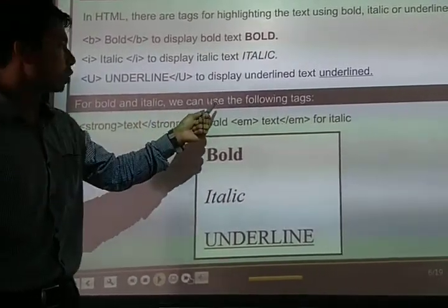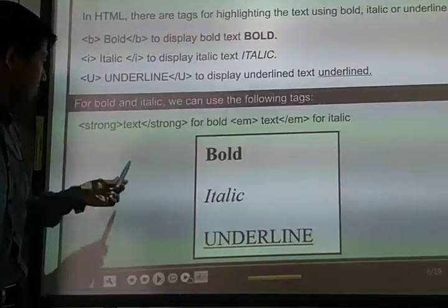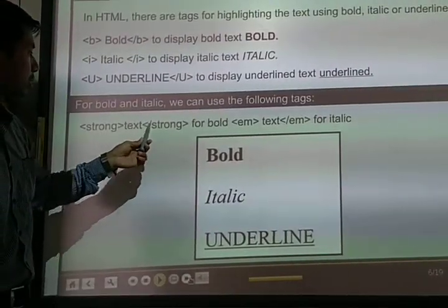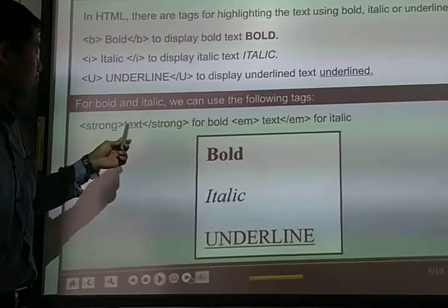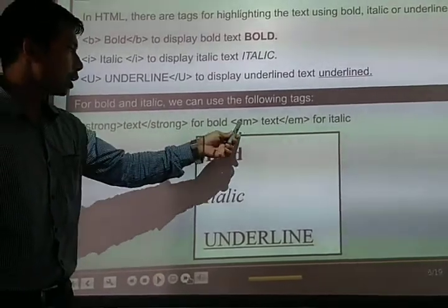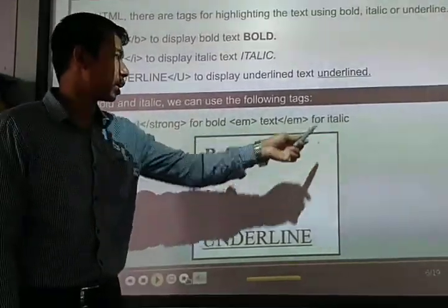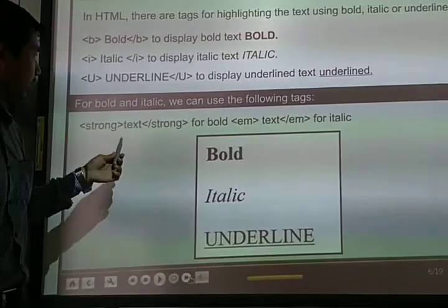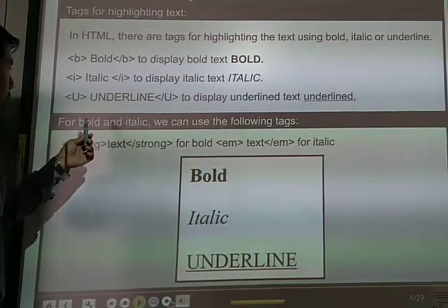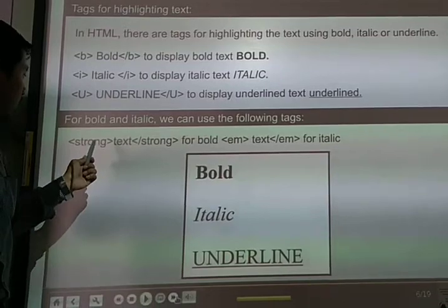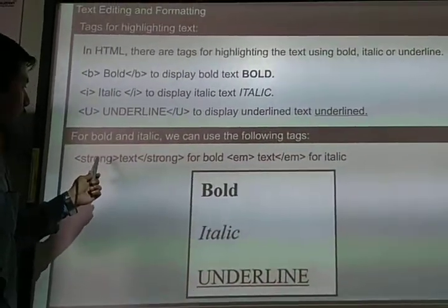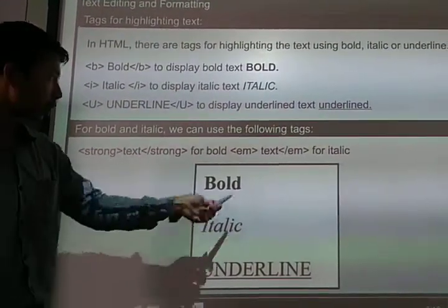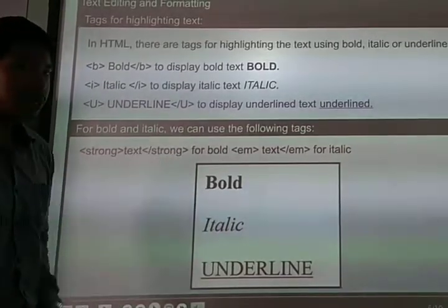For bold and italic, we can use the following tags: strong text for bold, and em text for italic. These are the different types which can be used for bold and italic. Strong is there for bold and em is there for italic.